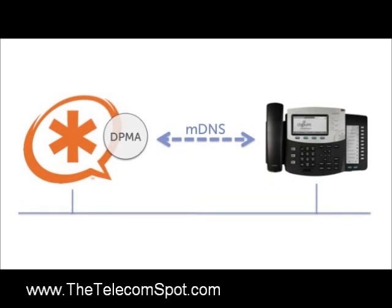Digium phones and the DPMA make use of a protocol called MDNS to locate each other on the network. MDNS, or multicast DNS, is a method for automatic name resolution. Apple's Bonjour and Linux's Avahi are both implementations of MDNS. Essentially, when an Asterisk server with the DPMA and Digium phones are placed on the same network, they are able to locate each other and begin communicating automatically via MDNS.